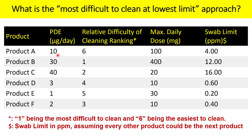Based on the factors briefed earlier, cleaning difficulty will be assessed. The numbers 1 through 6 represent cleaning difficulty: 1 is the most difficult to clean — meaning the drug substance is very difficult to clean — while 6 is the easiest to clean, perhaps having great solubility in the selected diluent.